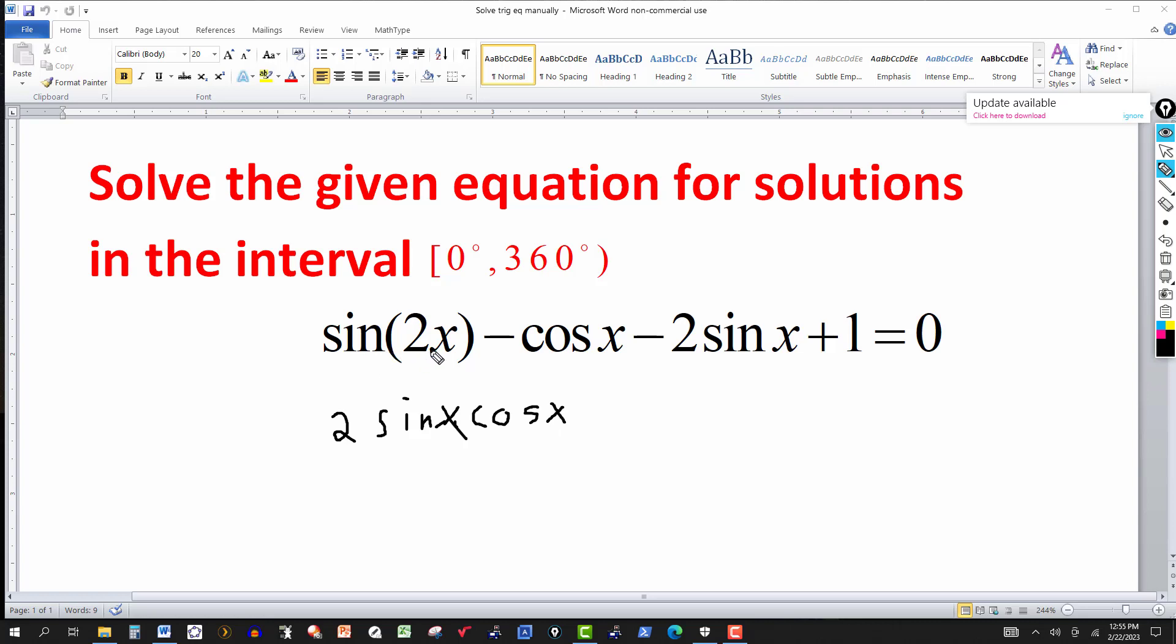So sine of 2x using double angle identity can be written as twice the sine of x, the cosine of x, and then we have minus the cosine of x.